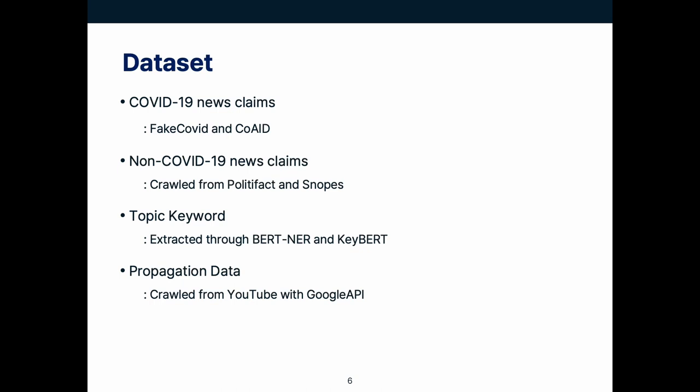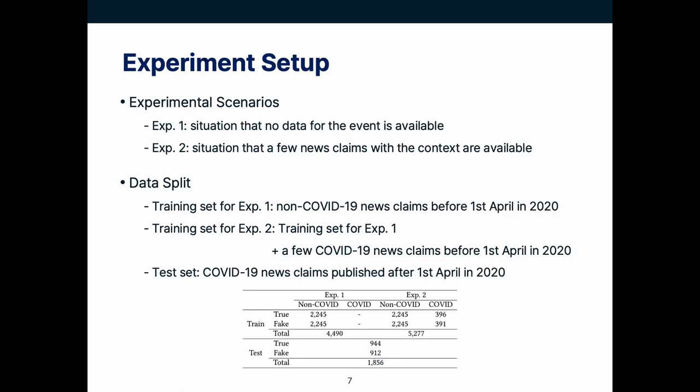For the model training, we construct a dataset that consists of four main things: COVID-19 and non-COVID-19 news claims, and their corresponding topic keywords and propagation data. Based on this dataset, we set up two different scenarios designed from a practical standpoint.